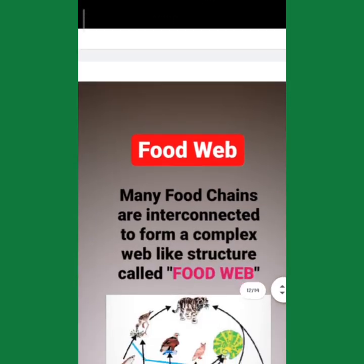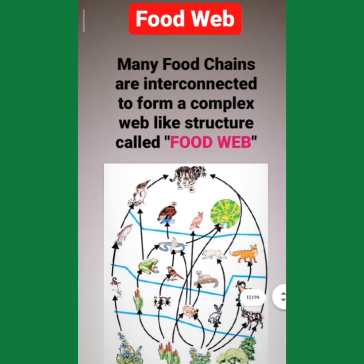Now, what is the food web? The food chain shows only one chain, but if a lot of food chains connect to one another, they form a web structure — we call this a food web. If you look at the entire diagram, you can see that many chains are involved in food transfer. That is why we call the whole structure a food web.